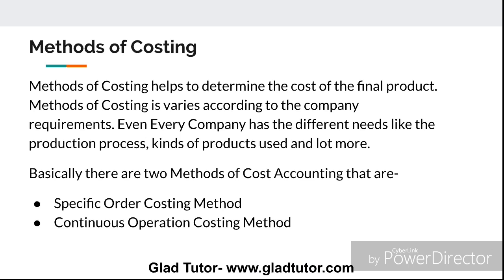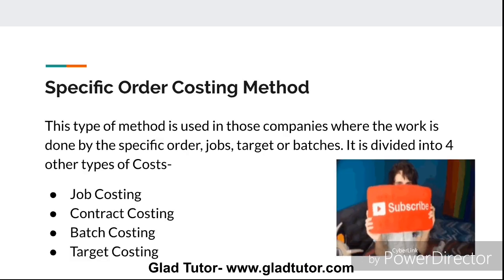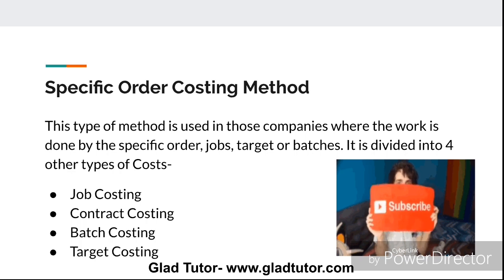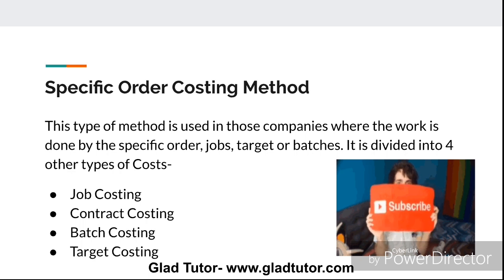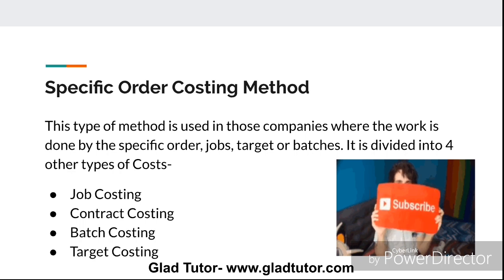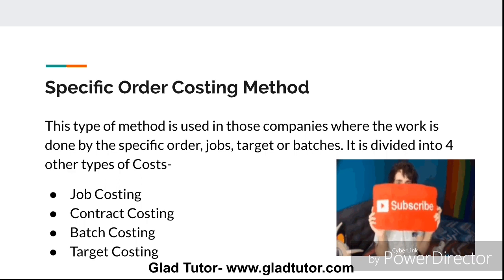Basically, there are two methods of costing in cost accounting. The two methods are: specific order costing method and continuous operation costing method. The first method is specific order costing method. This type of method is used in those companies where the work is done by specific order — jobs, target, or batches. We also divide specific order costing into four types.